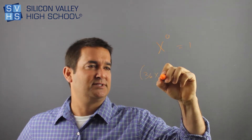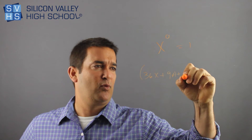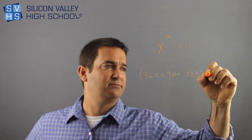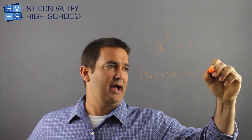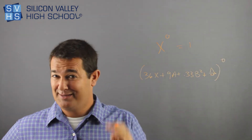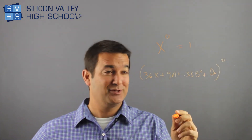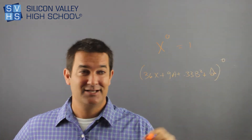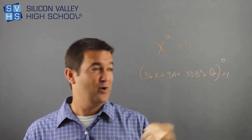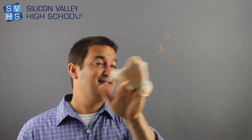36x plus 9a plus 0.33b squared plus a house — all of that to the zero, what is the answer? The answer is totally just one. I don't care what is to the zero. Anything to the zero is one, so that's done.